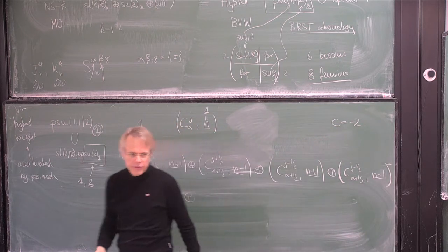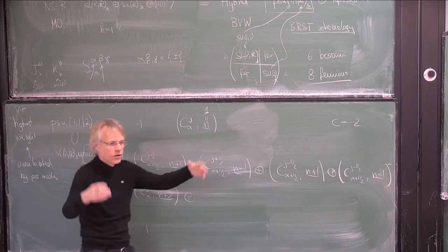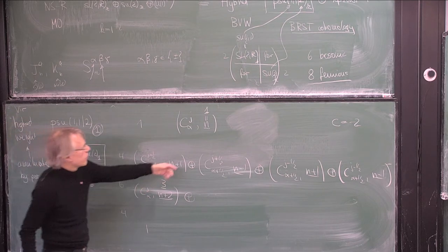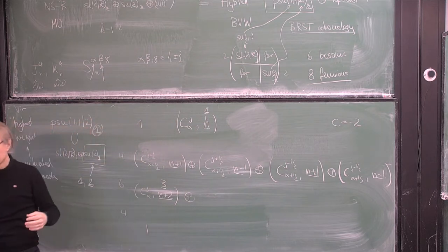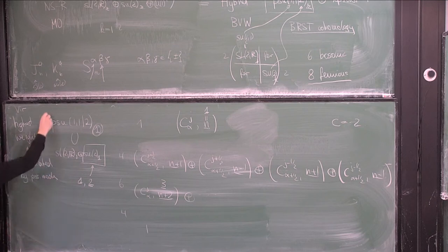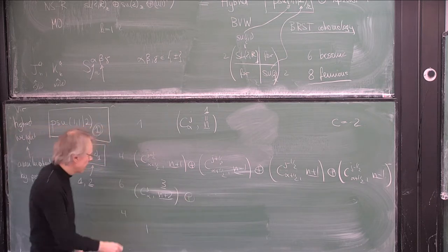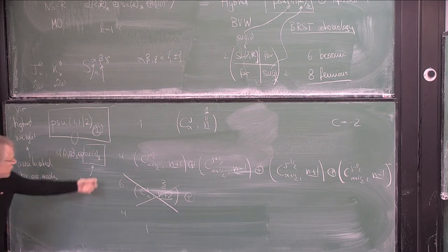Another way of putting it is that there are null vectors from the SU2 sector that are incompatible with a generic long representation. So you have to ask what the allowed representations are — they must be short representations. This is the whole concept of BPS representations: there are generic long representations where roughly half the fermions act non-trivially, and short representations where some fermions that would normally act non-trivially have to act trivially. At level 1 of this affine Kac-Moody algebra, only short representations exist.